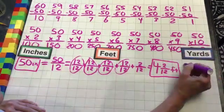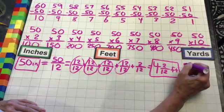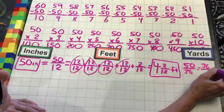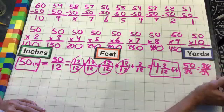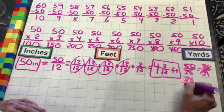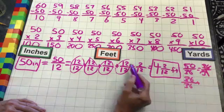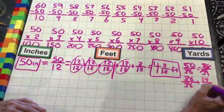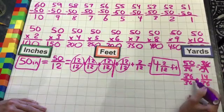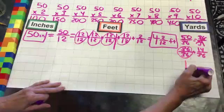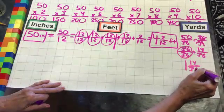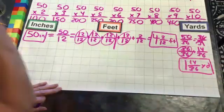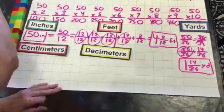And when we put this in yards, we want 50 over 36. We have 36 over 36, so we know we have 12 and two, giving us 14 over 36. So we have one whole and 14 thirty-sixths of a yard. Let's do our metric system: centimeters, decimeters, and meters.